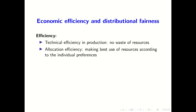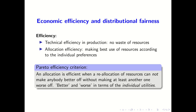Let us start with a brief recap about efficiency. Technical efficiency very simply means that there is no waste of resources when we are producing goods. Allocation efficiency, however, is a little bit more tricky. This answers the question of how we can make the best use of resources given individual preferences. This refers to the Pareto efficiency criterion: an allocation is called efficient when a reallocation of resources cannot make anybody better off without making at least another person worse off. This better off and worse off is in terms of individual utilities — that's very important.